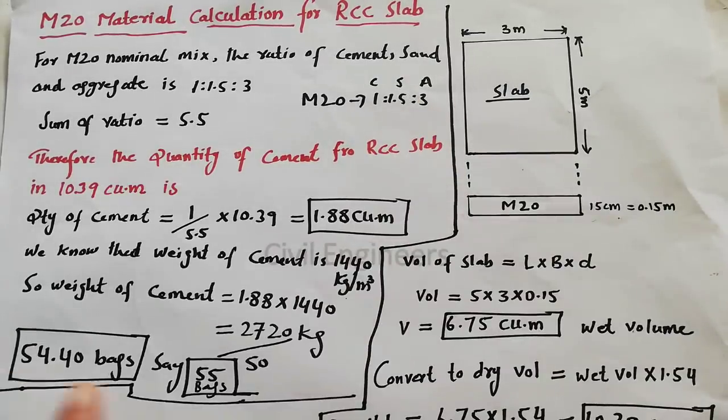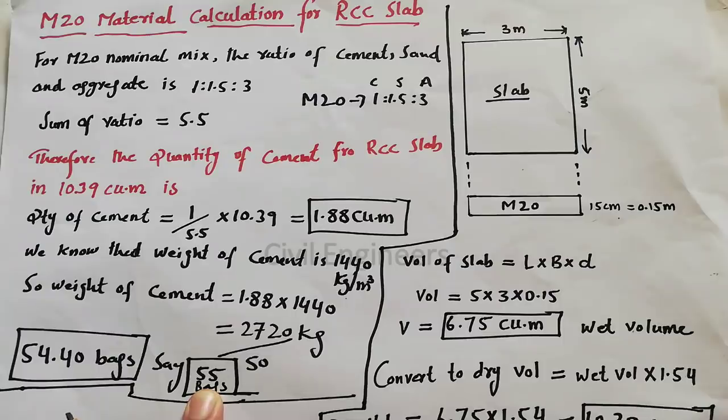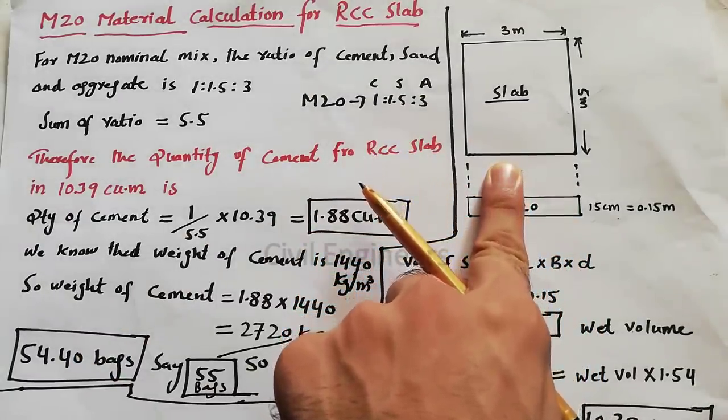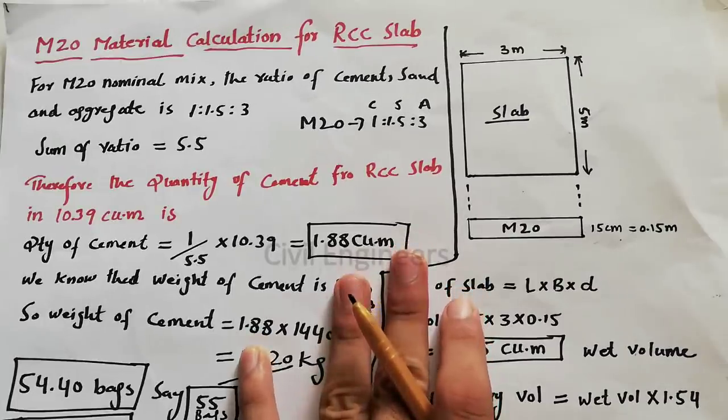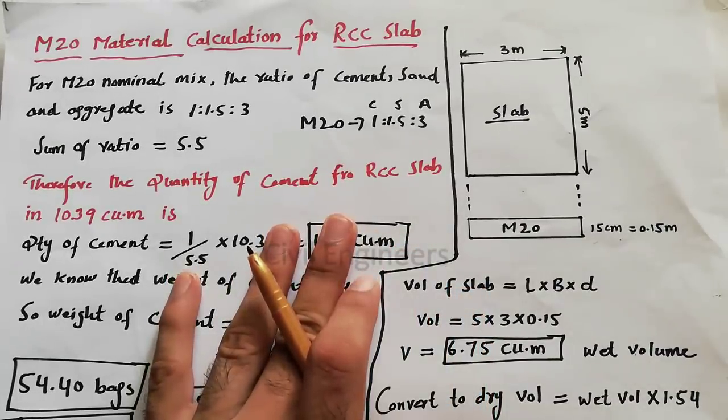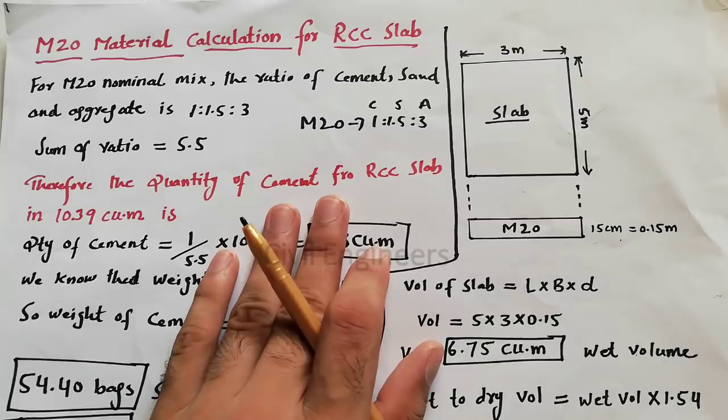2.83 cubic meter volume of sand is required for this slab, and also 55 numbers of cement bags are required for this slab. If you have any question, please comment. I will try to reply your answer. Thanks for watching. See you in next video.